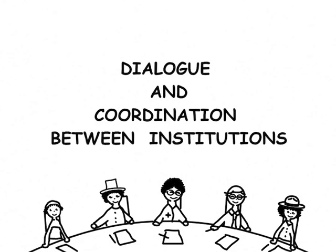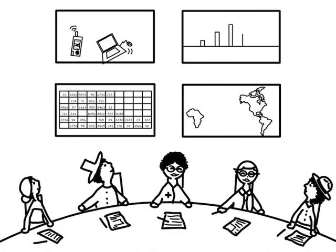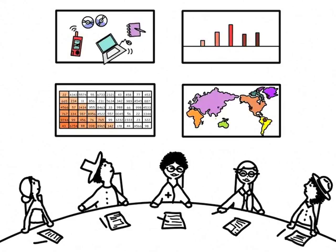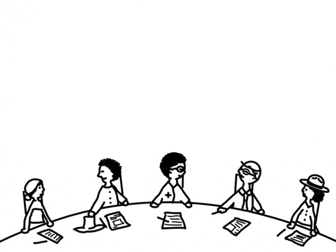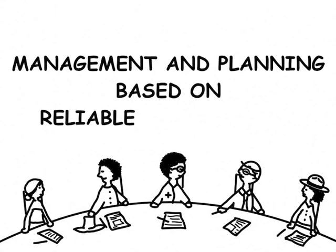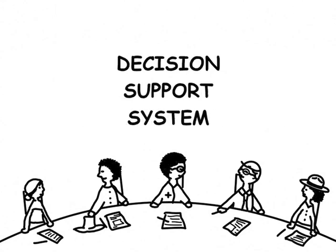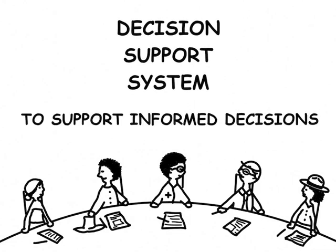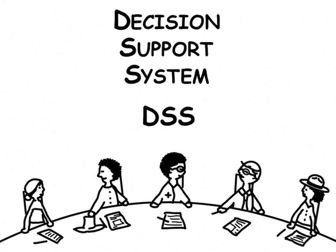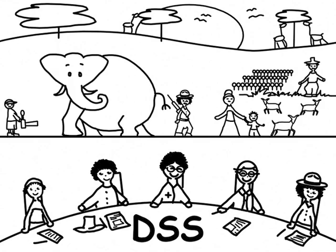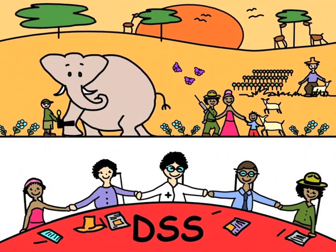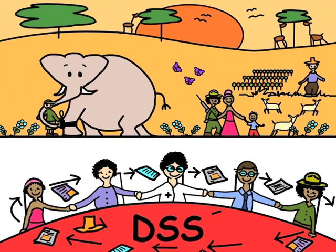Dialogue and coordination between institutions through management and planning, based on reliable information using a decision support system, helps to structure data collection and processing. It offers an integrated environmental impact analysis of ecosystems and monitoring. A single system like this can be used to support informed decisions and improve the livelihood of the stakeholders in the broader ecosystem. Everybody becomes a winner. With the DSS we can do this.